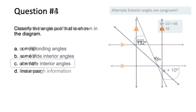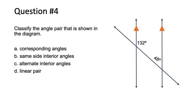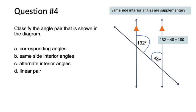Question 4: classify the angle pair shown in the diagram. First consider the parallel lines, then ask whether the angles are in the interior or exterior, or occupying the same position. These angles are on the interior of the parallel lines and on the same side of the transversal, so we expect option B — same side interior angles, which are supplementary. To verify: 132 plus 48 equals 180. Same side interior angles are supplementary; therefore we choose option B.